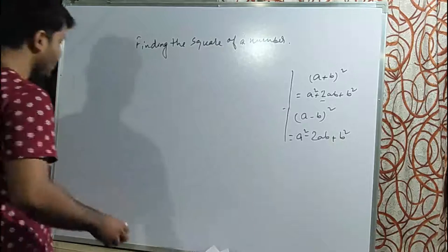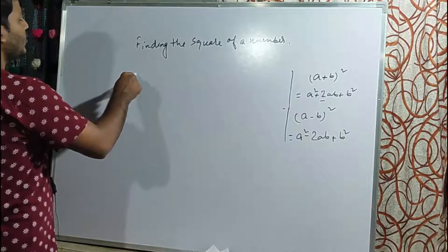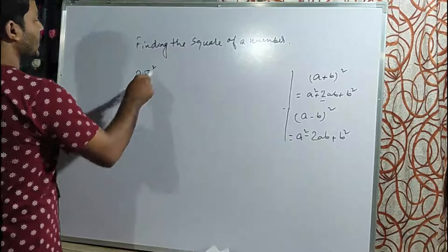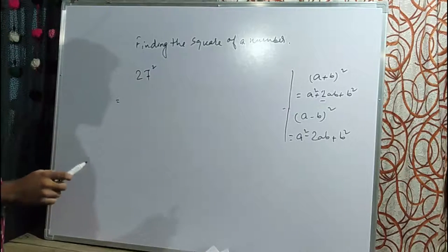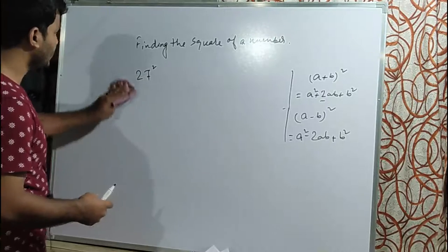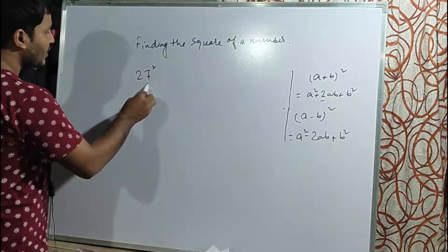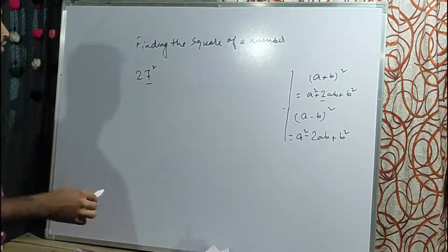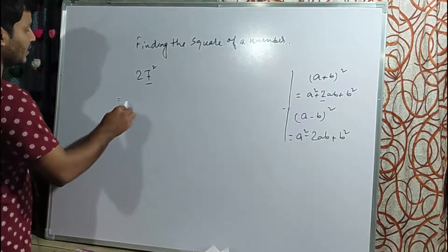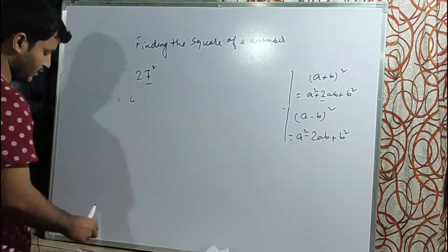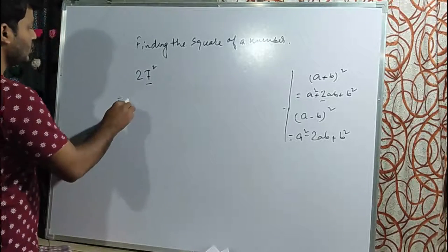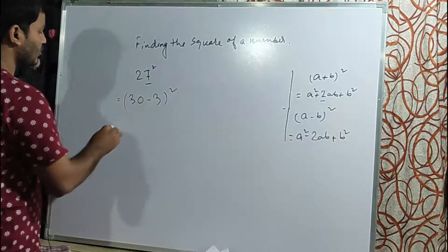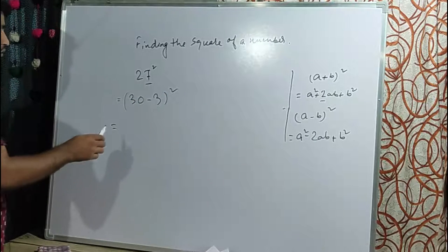Next, let's find 27². We can split this into 30 minus 3, so a equals 30 and b equals 3. We'll use the (a-b)² formula.